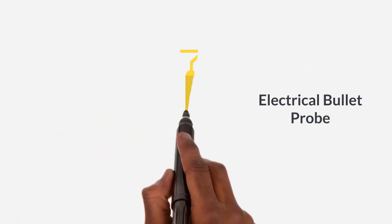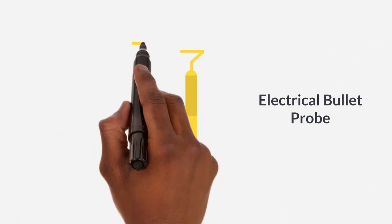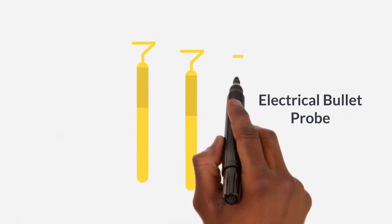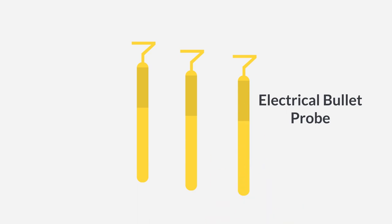After President James A. Garfield was fatally shot in 1881, Graham developed a surgical device that could detect metal in the body. He called this device an electrical bullet probe. This device became a precursor to the metal detector we have nowadays.